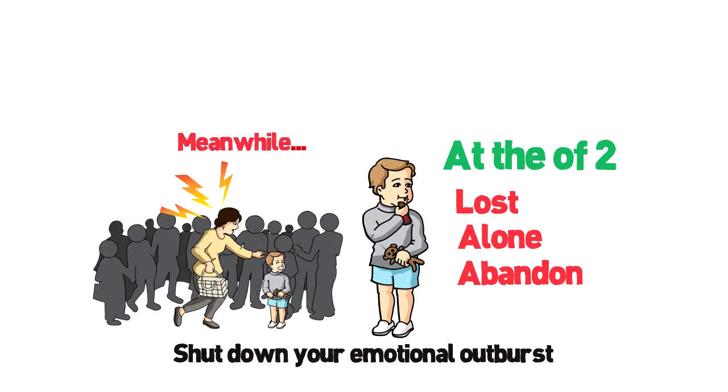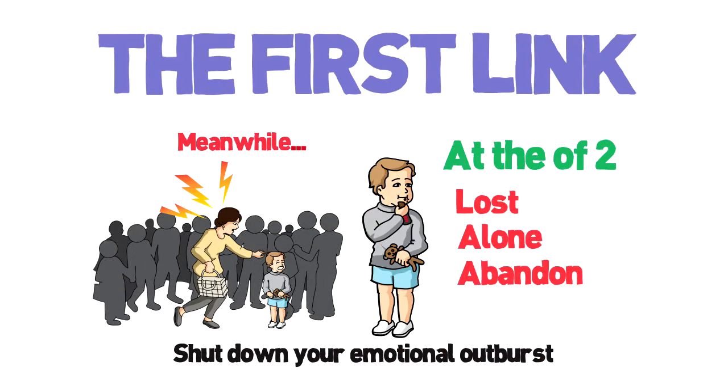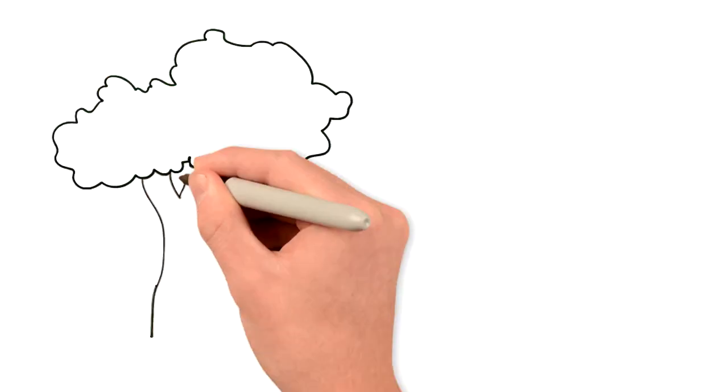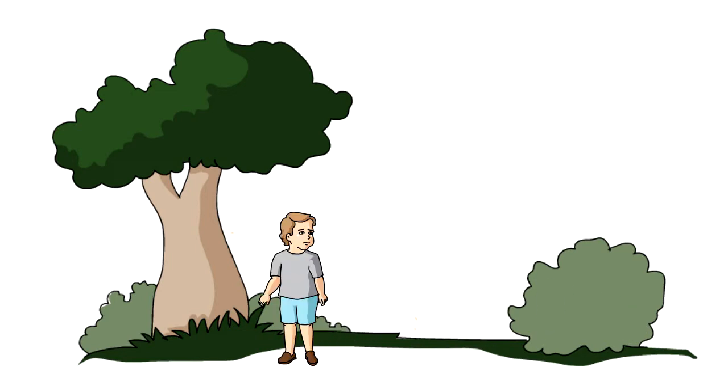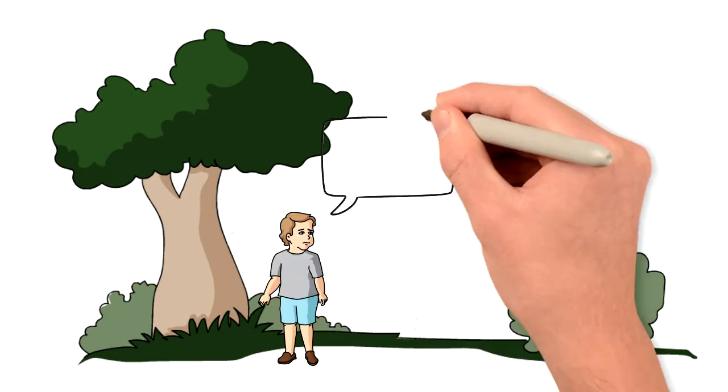This is the first link in the chain of lost, alone, and abandoned. Now you're at school, age six, playing hide-and-seek. You cover your eyes and count while your friends hide. They hide so well that after five minutes of looking, you can't find them.